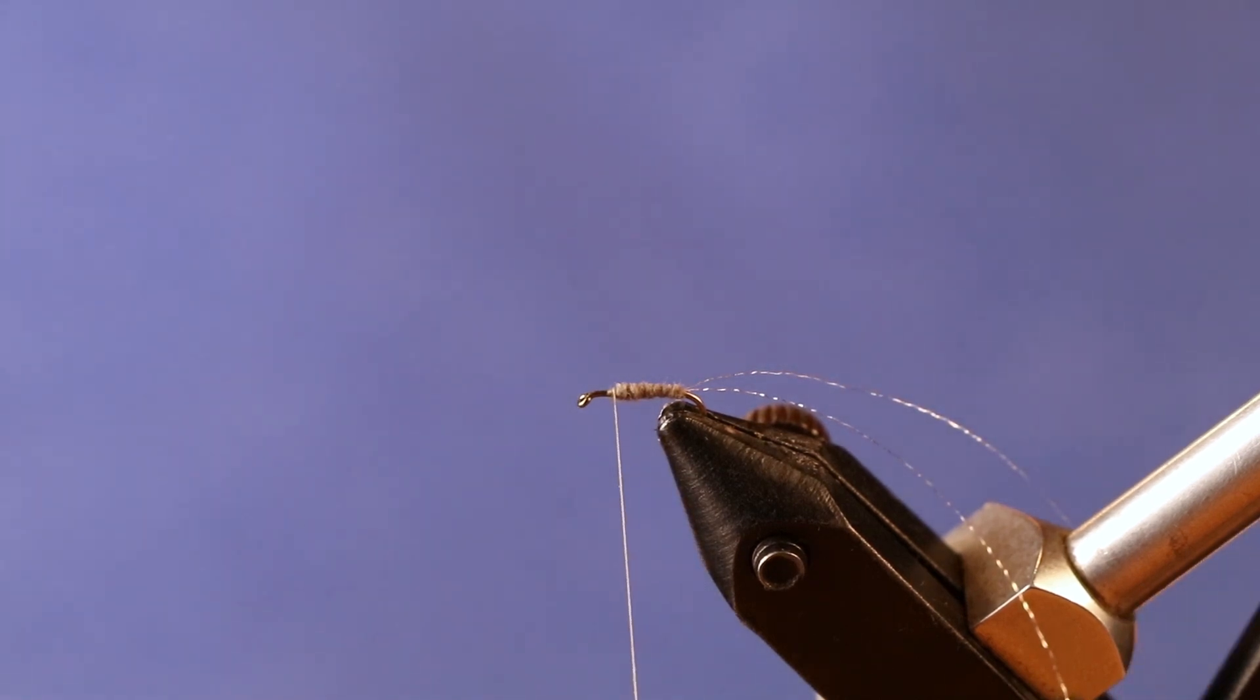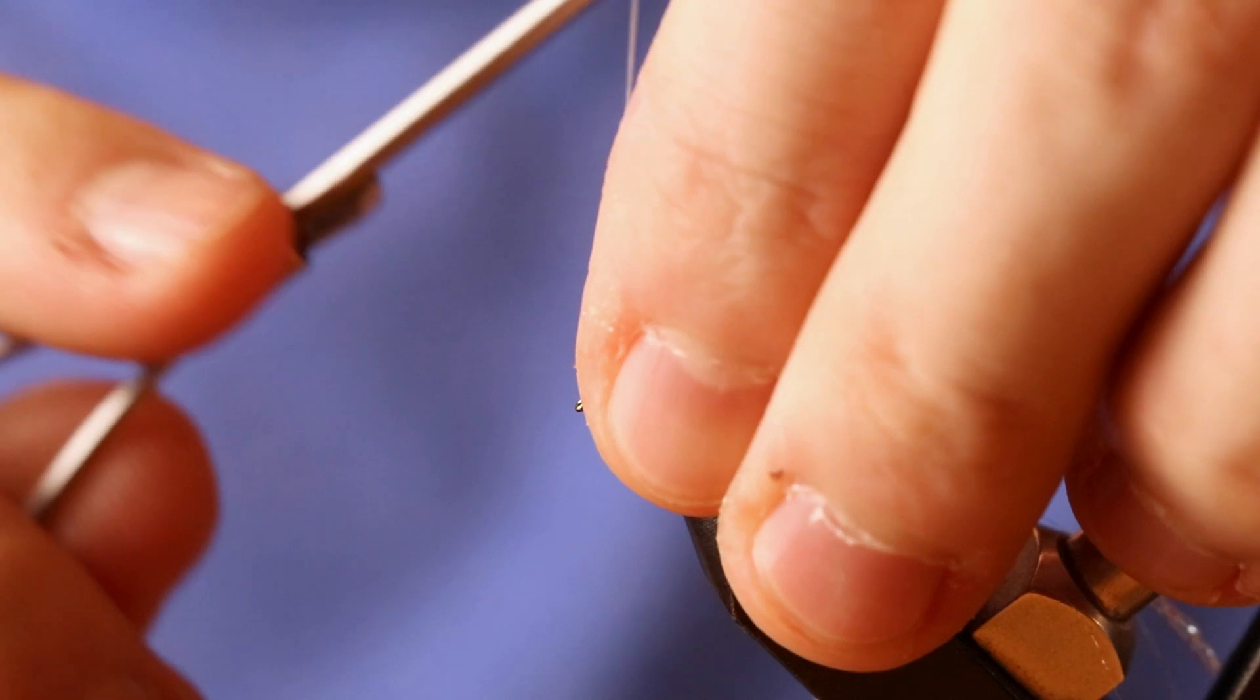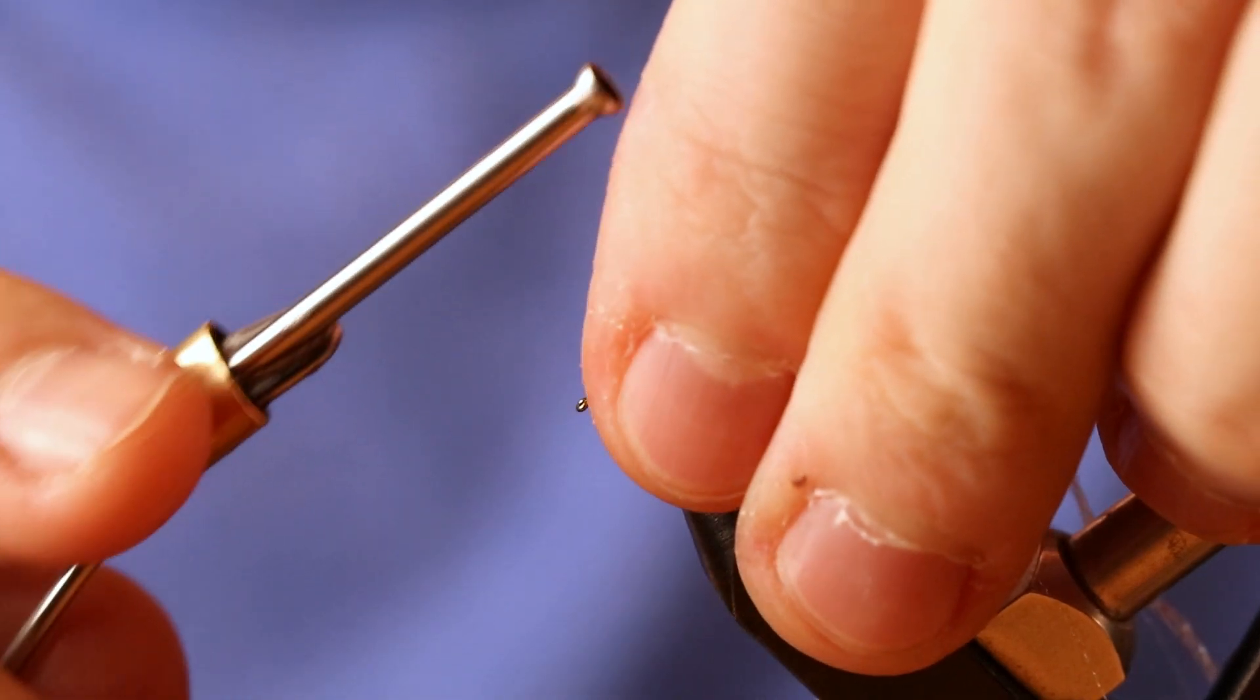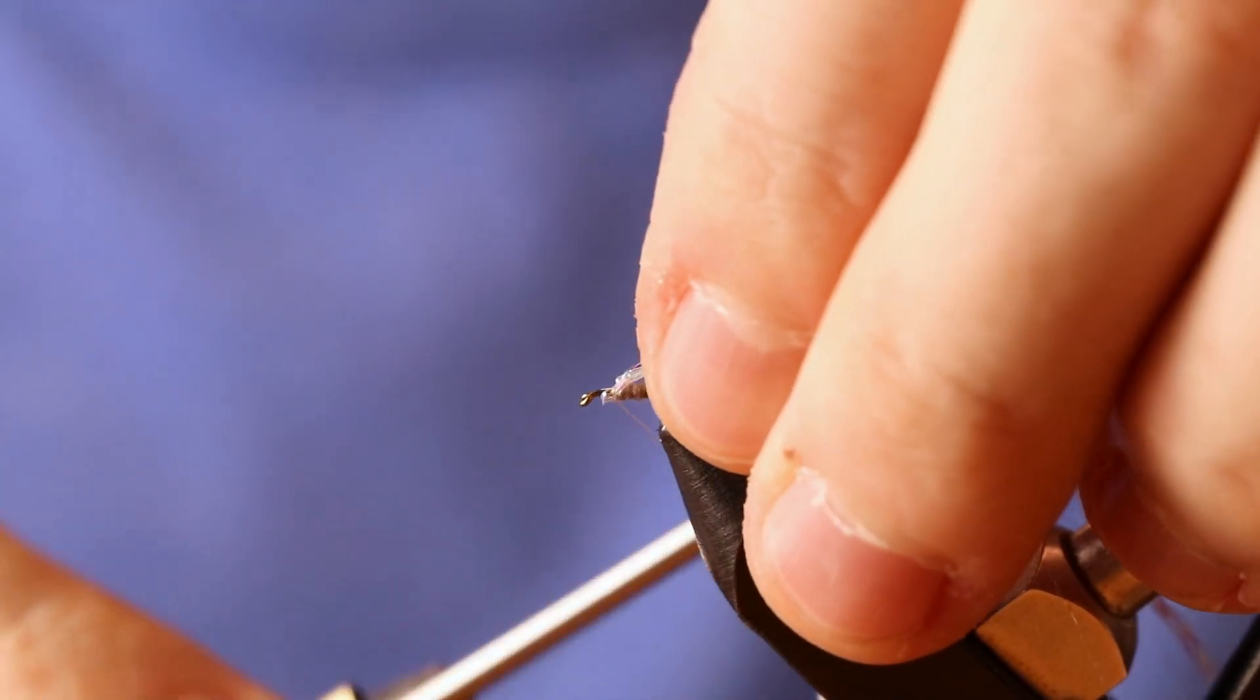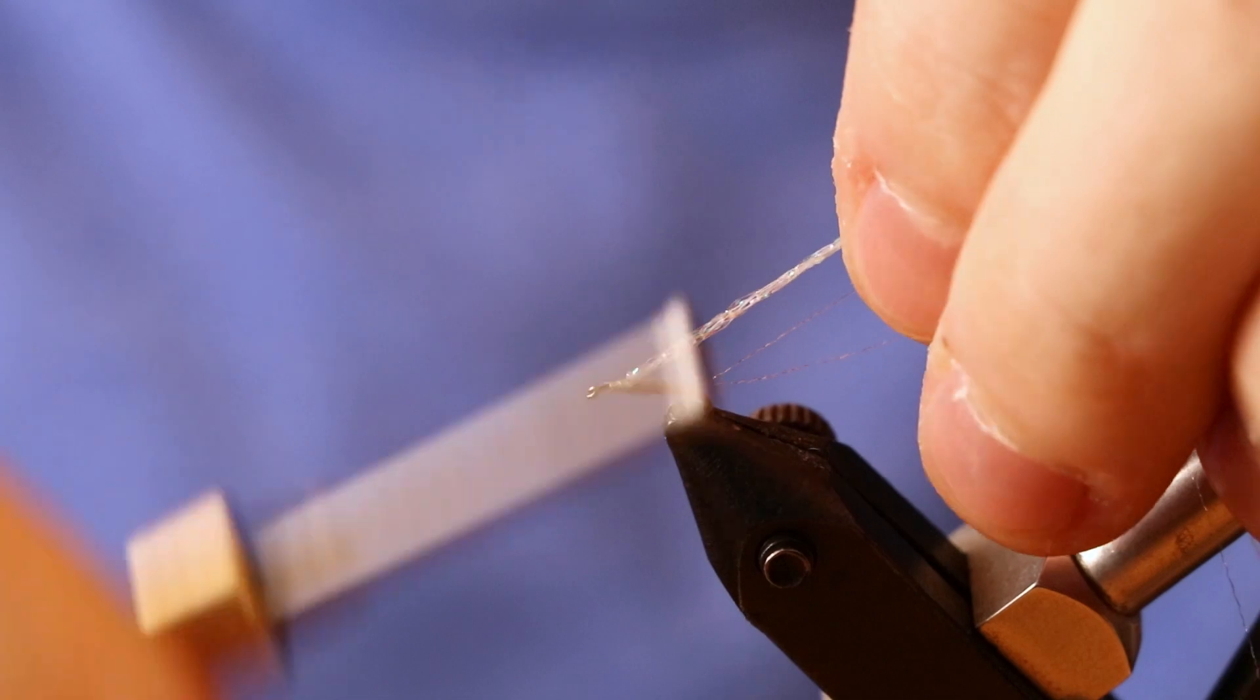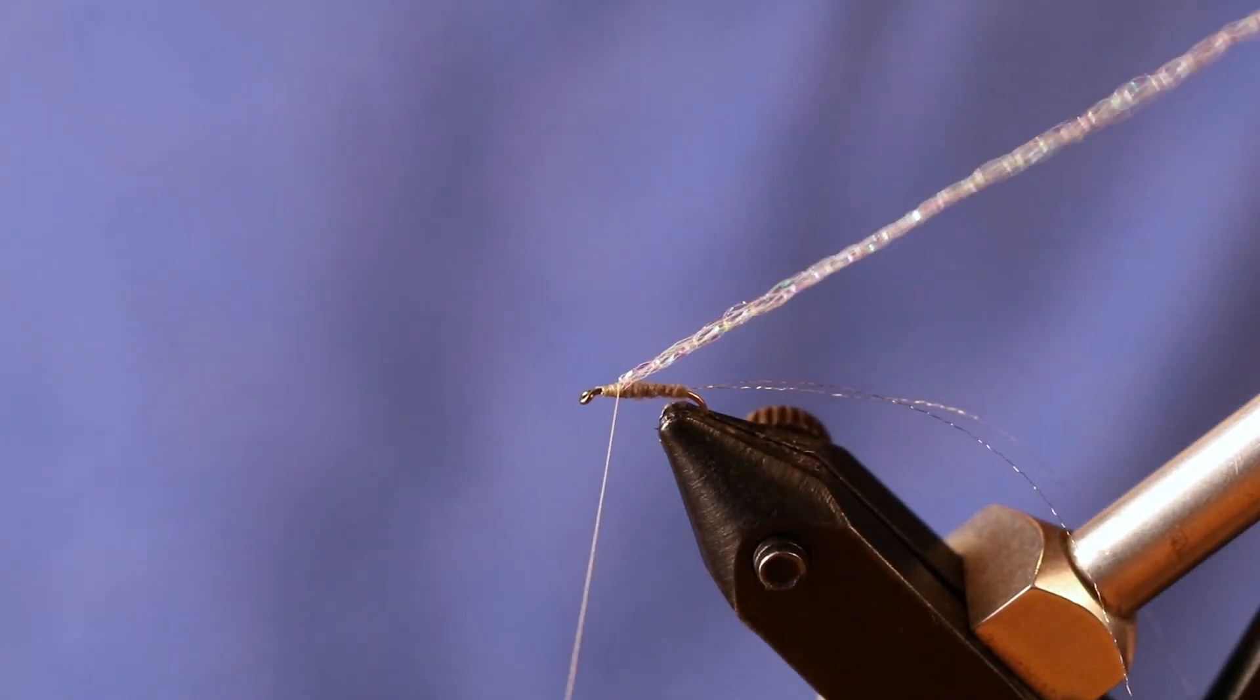This is going to be midge diamond braid in pearl. I like to use this material versus the mini flat braid in pearl that most people use. The reason being, it's just a little bit smaller, which means you can tie size 24s, the size that's going to catch fish at Cheeseman Canyon. You're not going to get away with the diamond flat braid when it's going to be half the size of your fly on a 24.